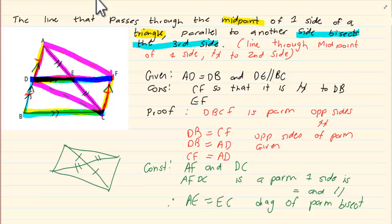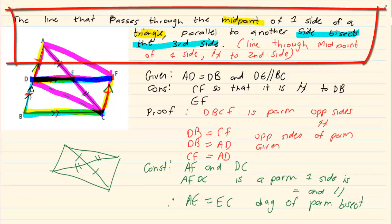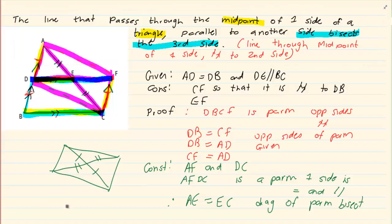Now in grade 10 you had done a theorem that states that the line passing through the midpoint of one side of a triangle parallel to another side then it bisects the third side. So what are they saying in this specific theorem?